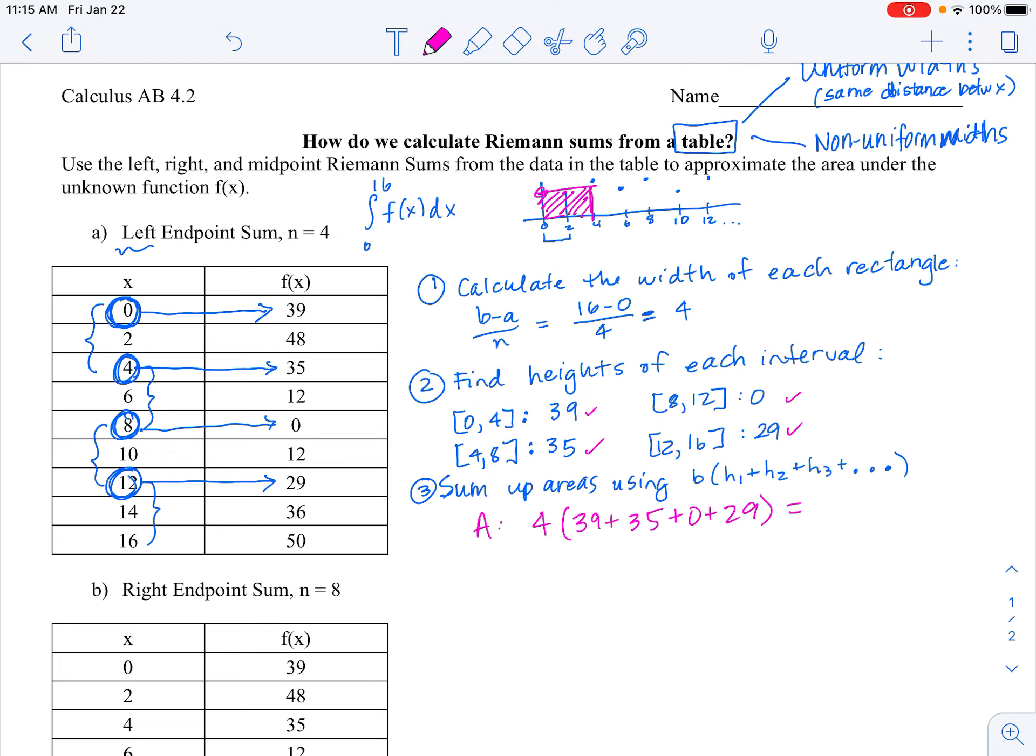Let's create my area. Every single rectangle has a base of 4, and then I'm going to add up all the heights, 39, 35, 0, and 29, to get my overall area. And then 4 times 103, so this would be 412 for our answer.